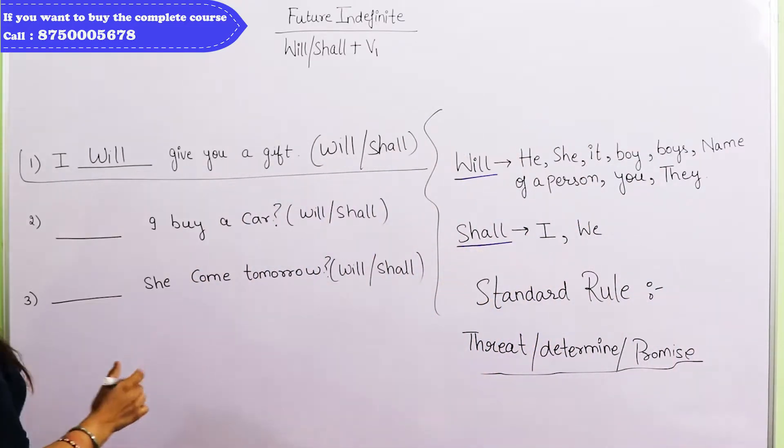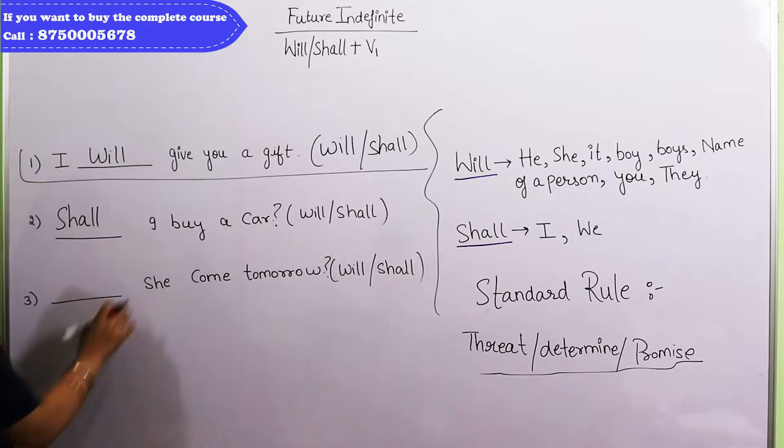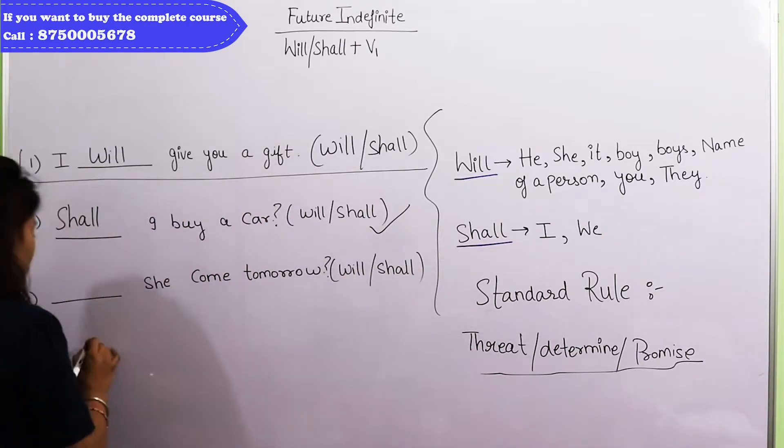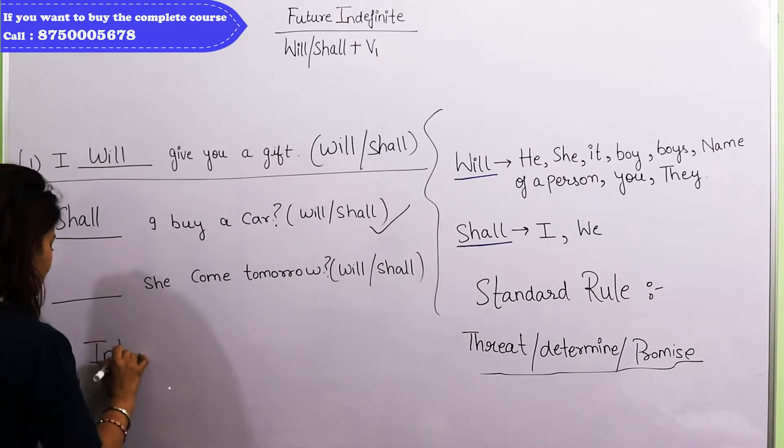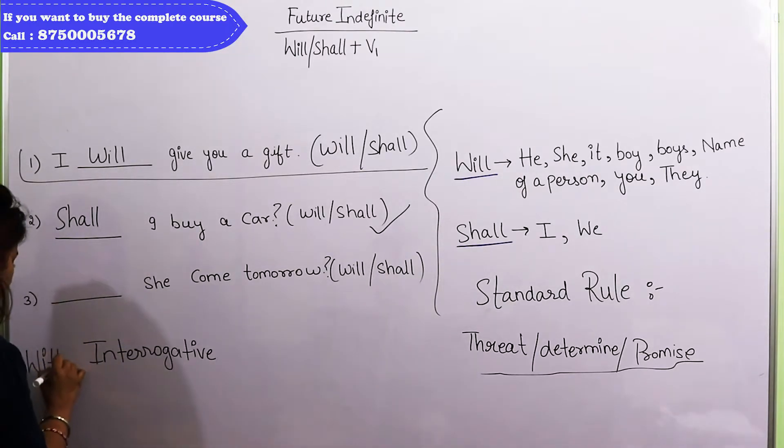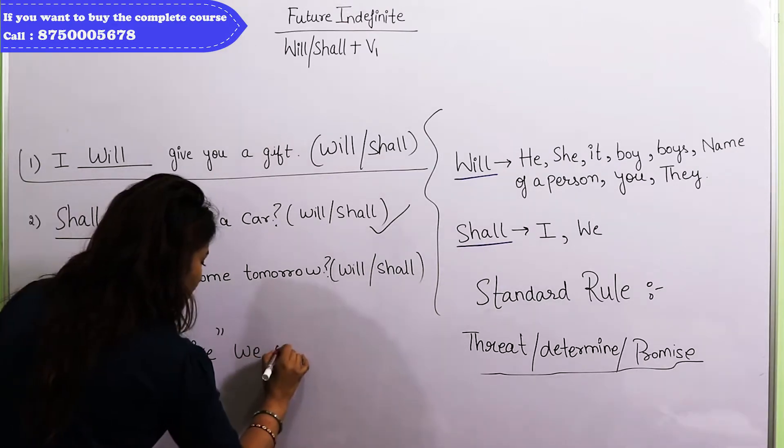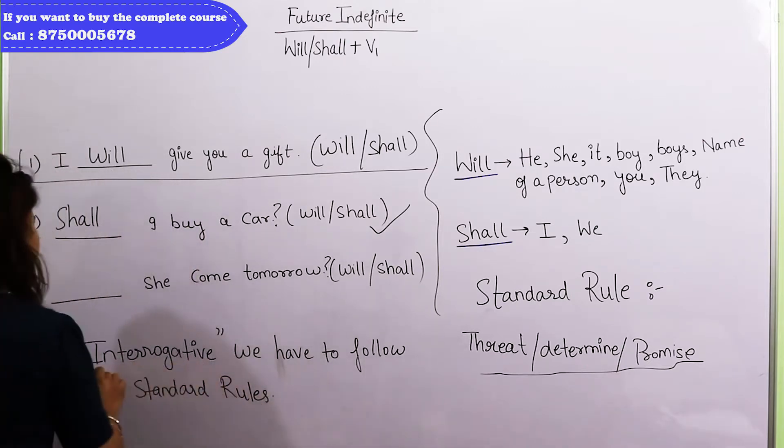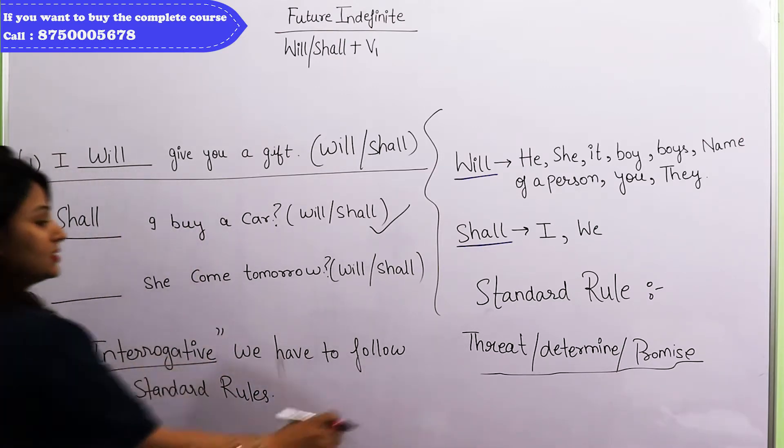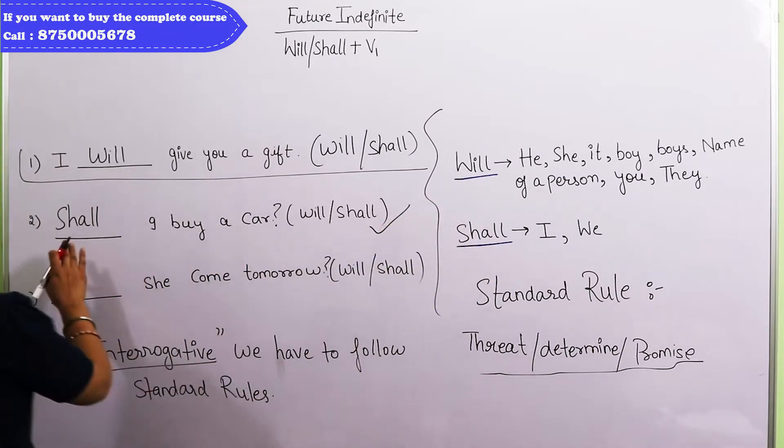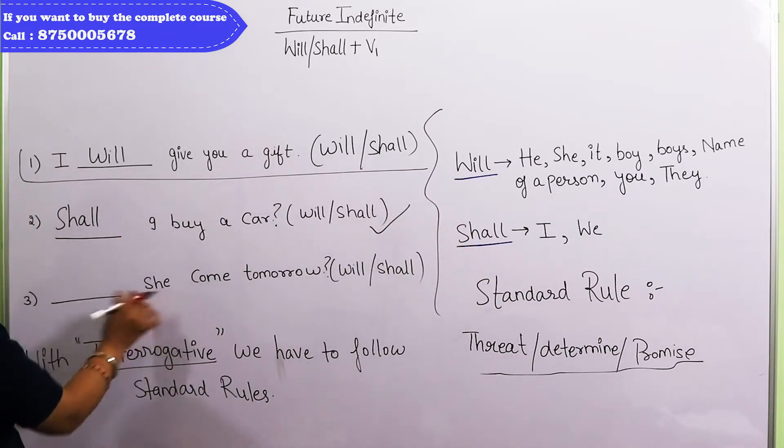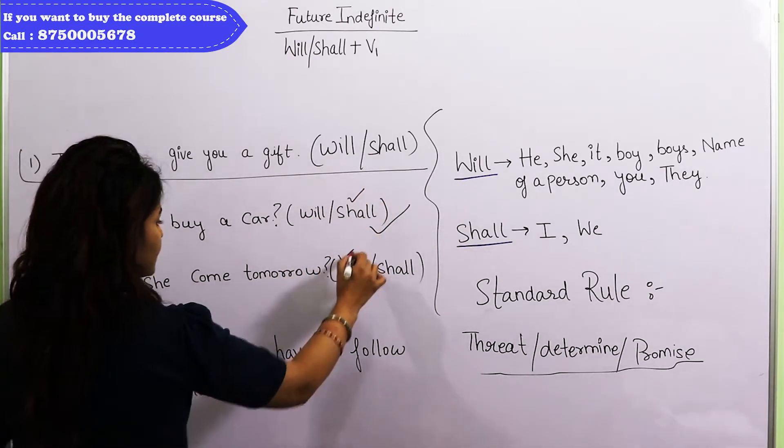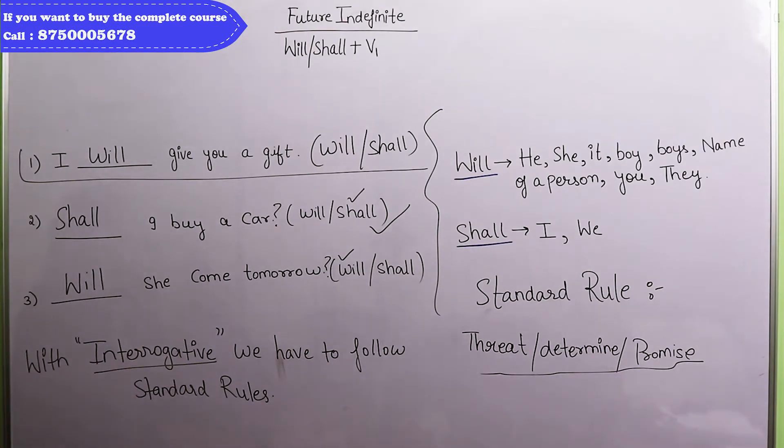But what is our rule? What is our standard rule? What is I like? Shall. If we put shall here, is our sentence right? This sentence is totally fine. Because when we have interrogative sentences, we have to follow standard rule. So, I like shall and she like she will. What is our right answer? It is shall and it is will. So, that's all in the future indefinite.